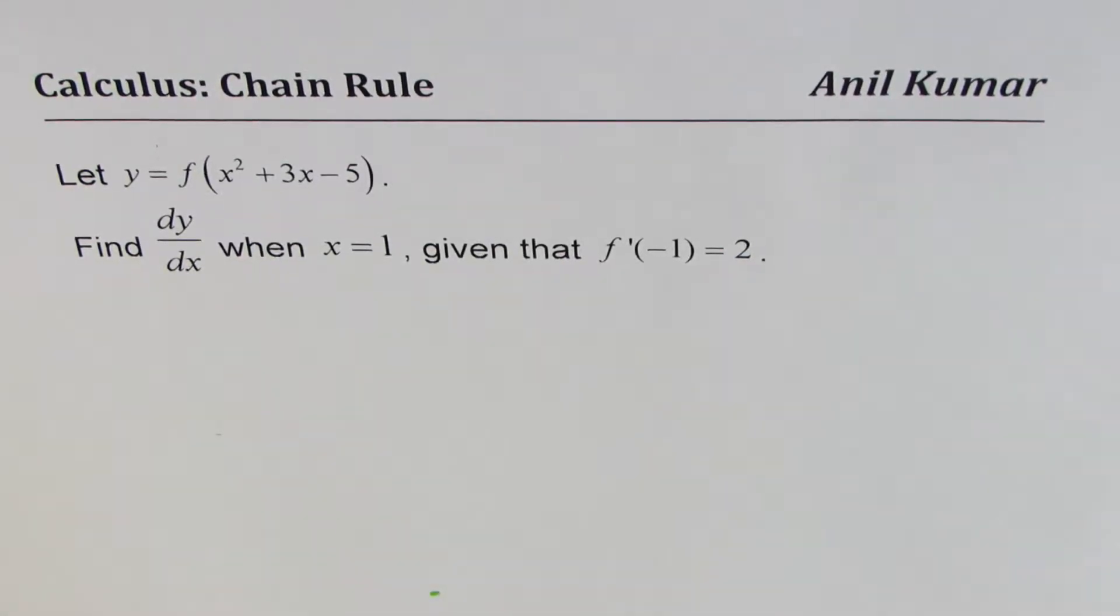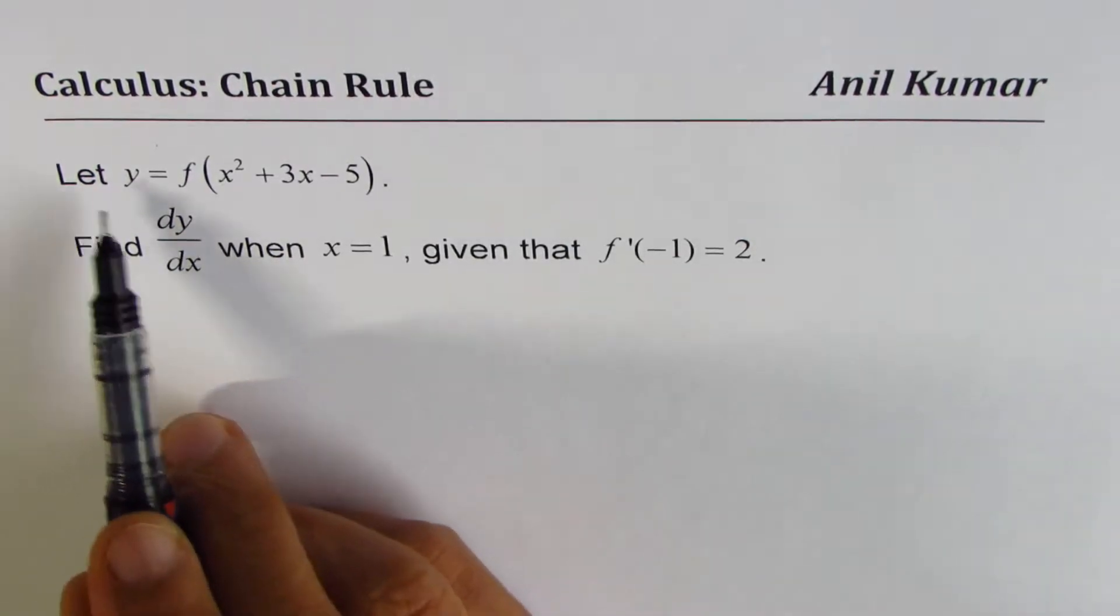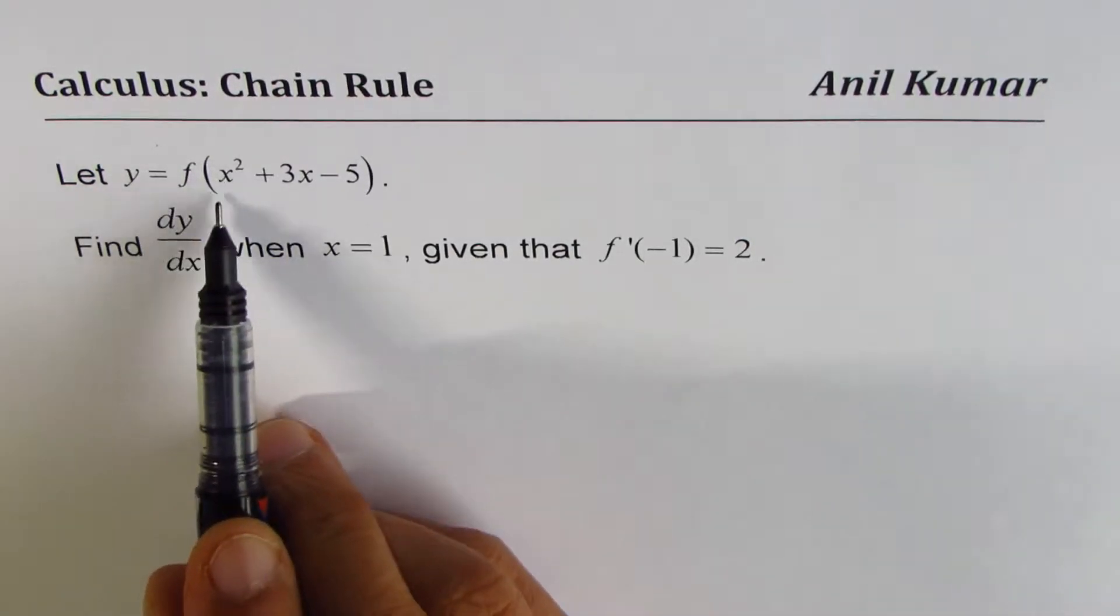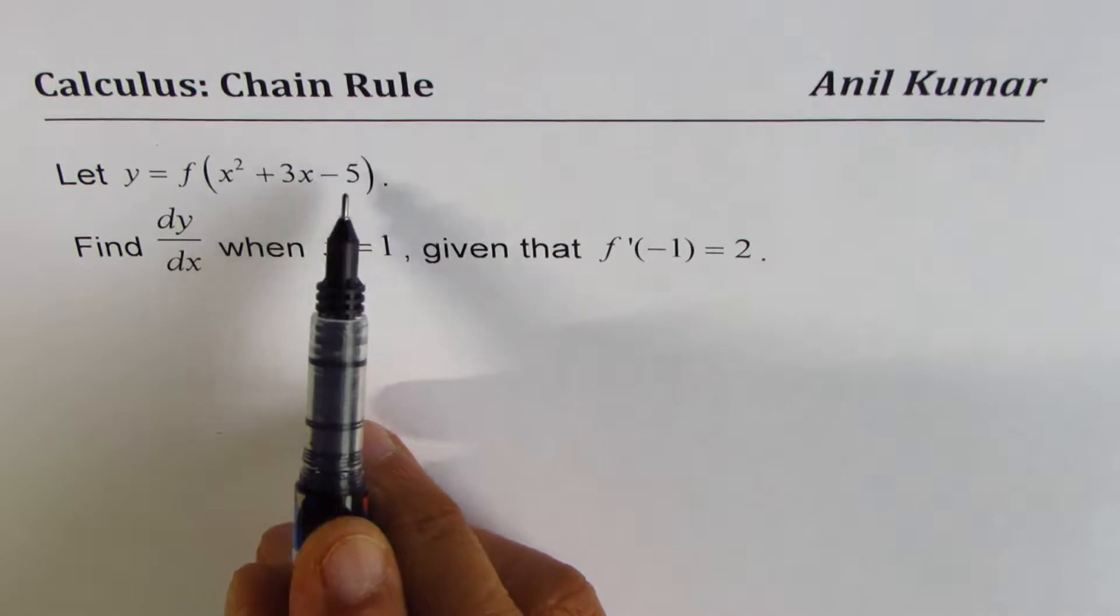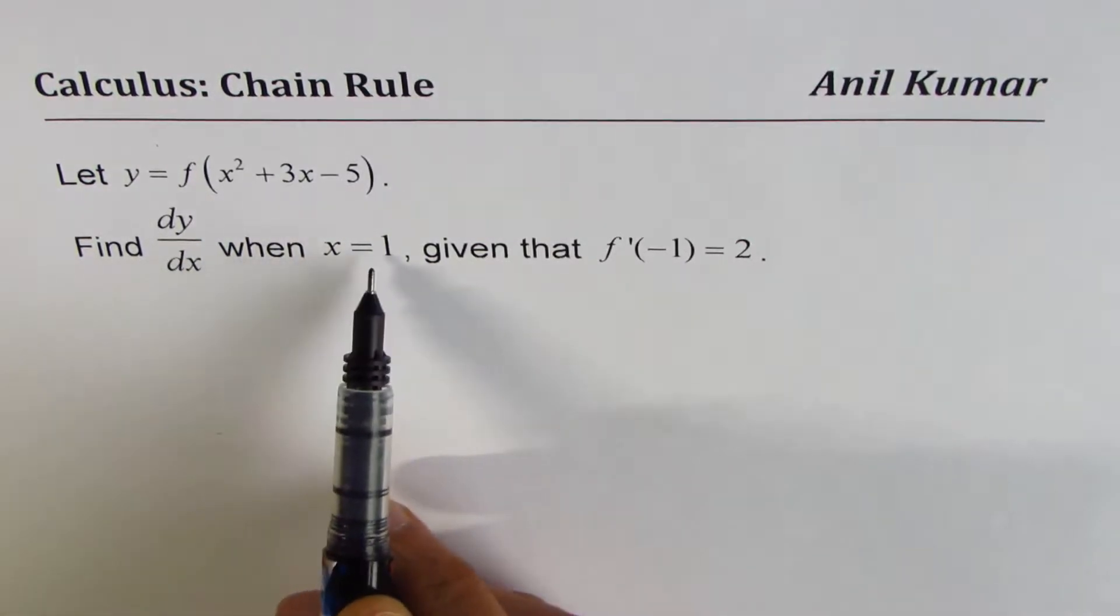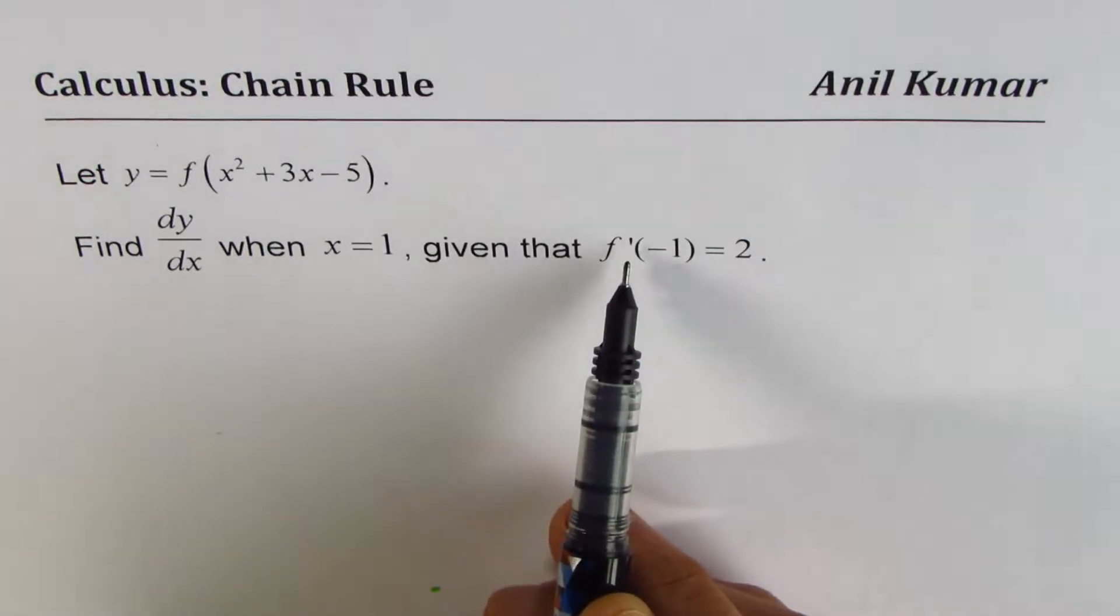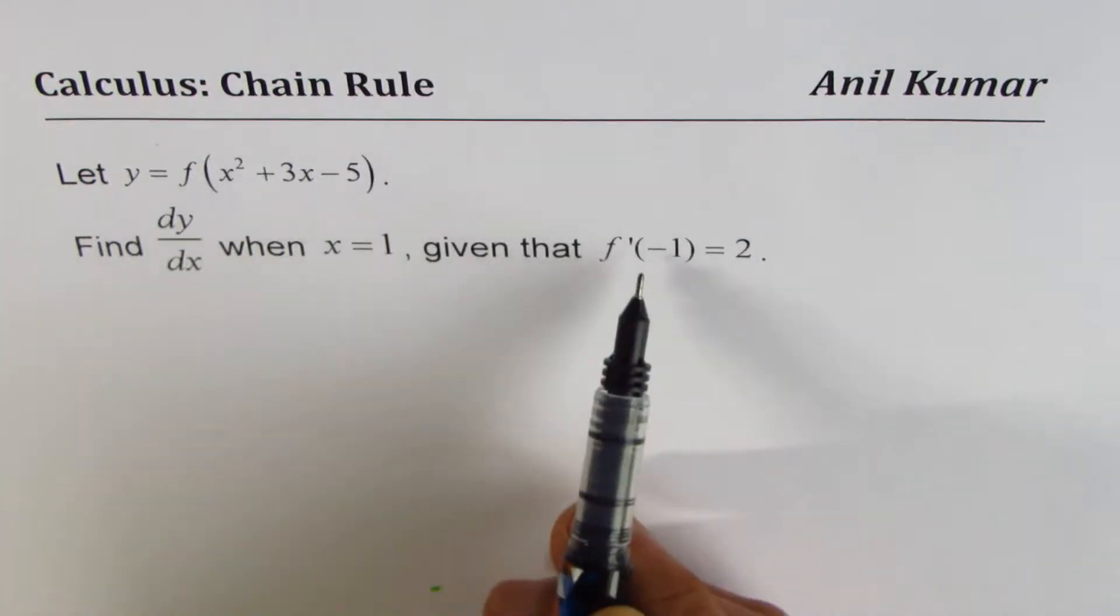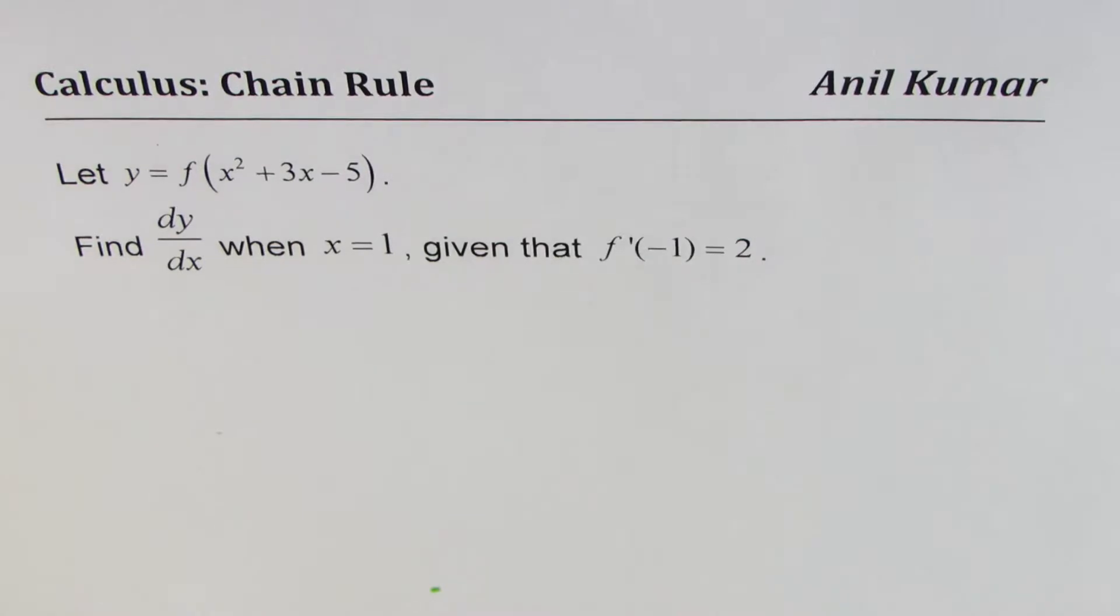I'm Anil Kumar. We'll practice chain rule with the help of this example. Let y equals f of x squared plus 3x minus 5. Find dy/dx when x equals 1, given that f prime of minus 1 is 2.